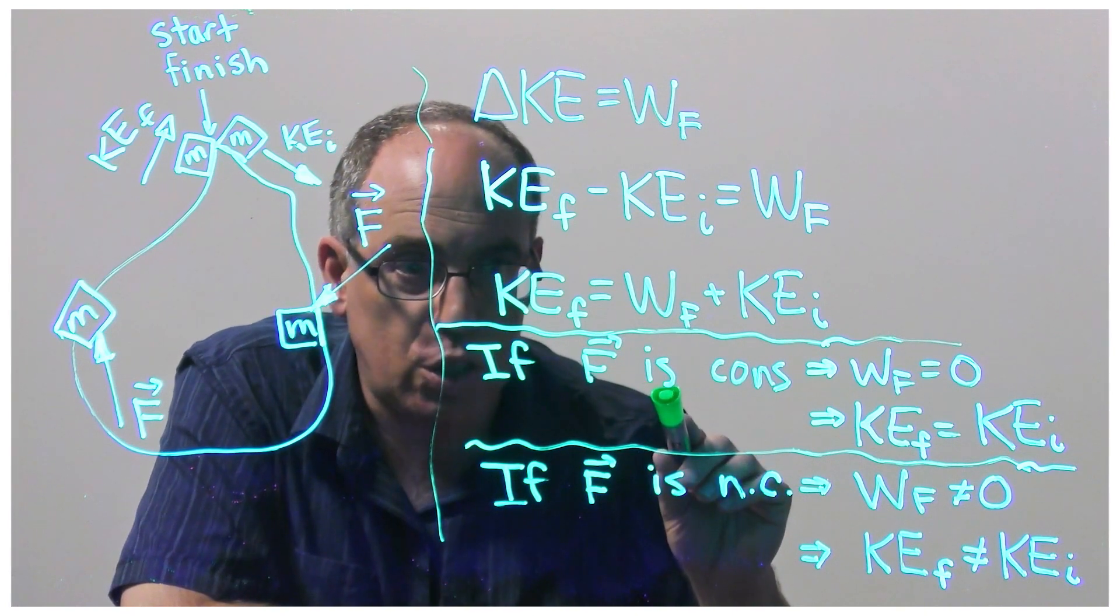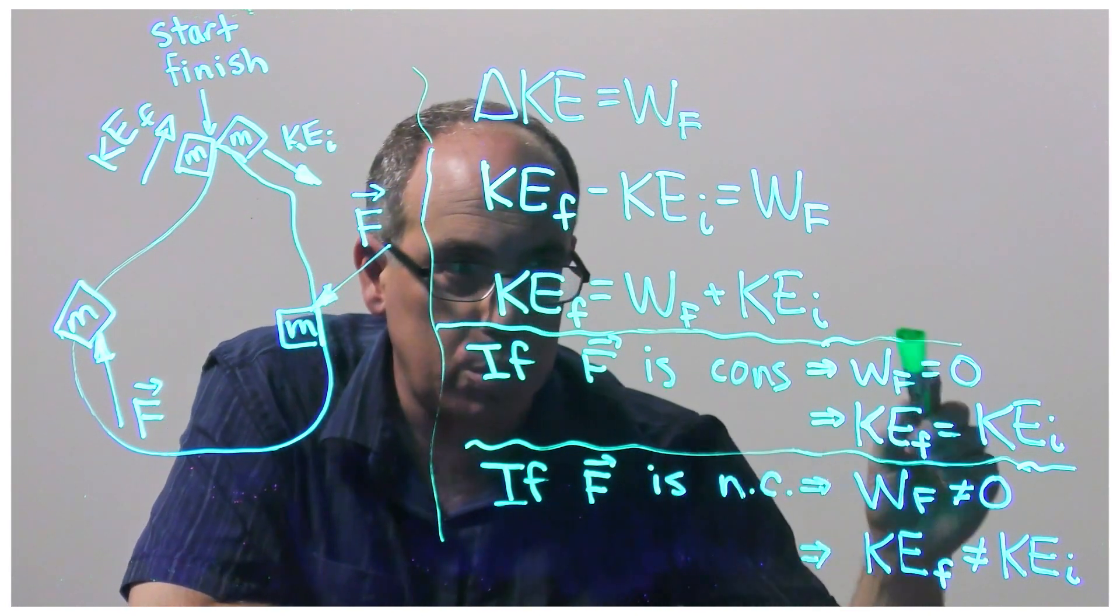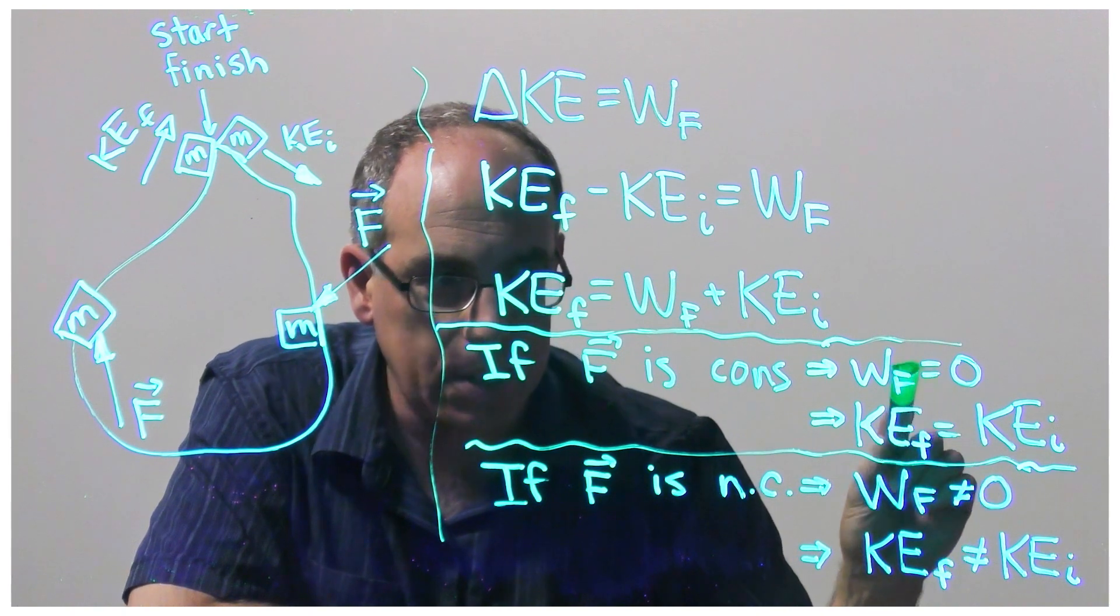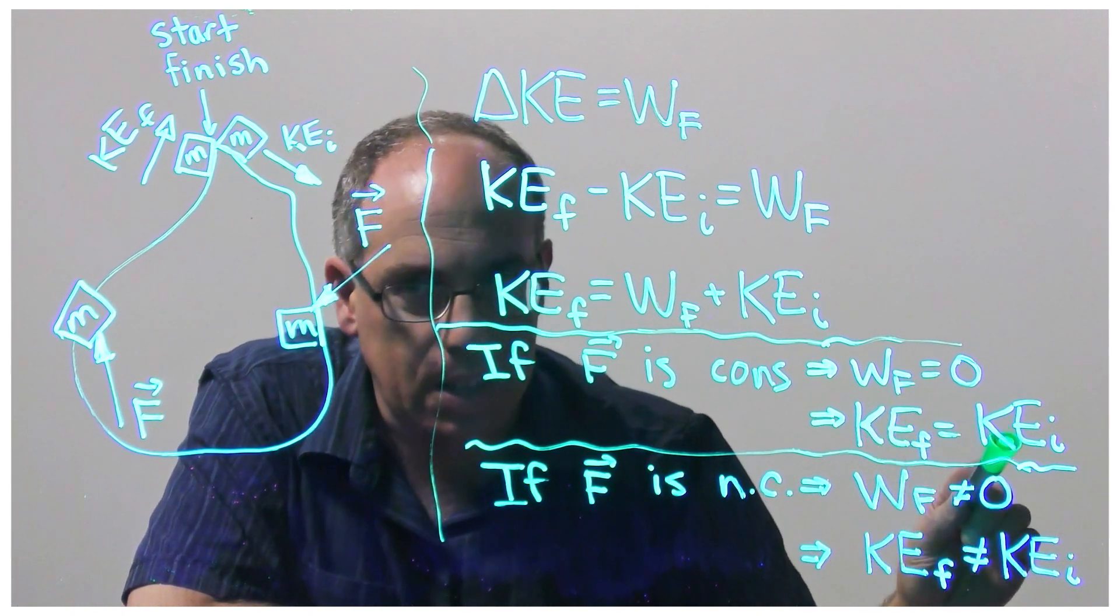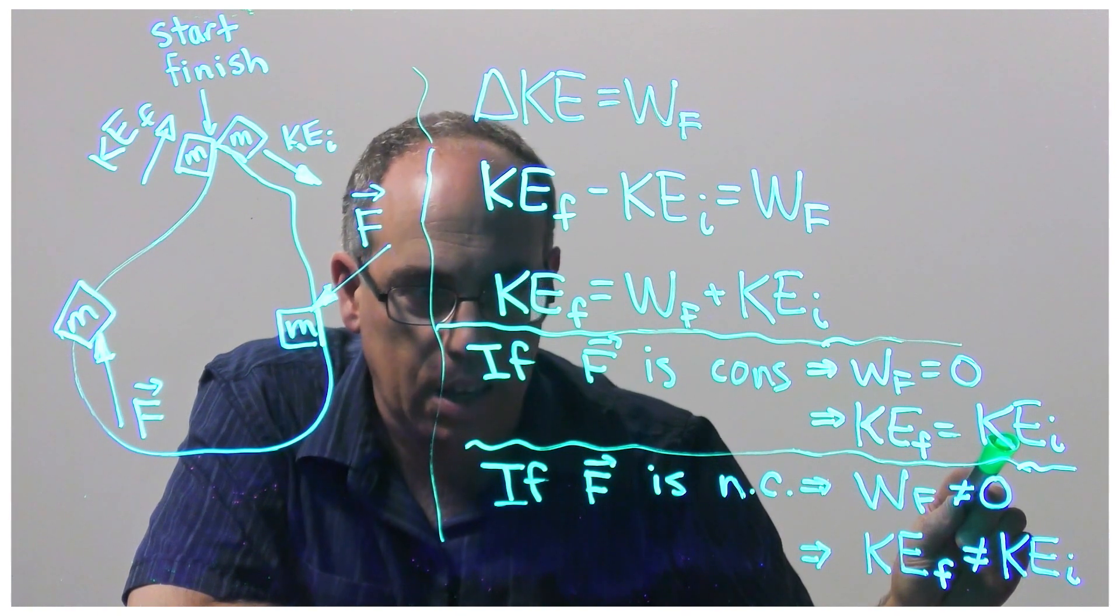If the force is conservative then the force will do a total work of zero on the mass, and then the kinetic energy of the mass at the end and the kinetic energy of the mass at the beginning will be the same.